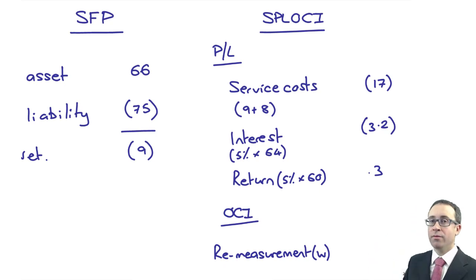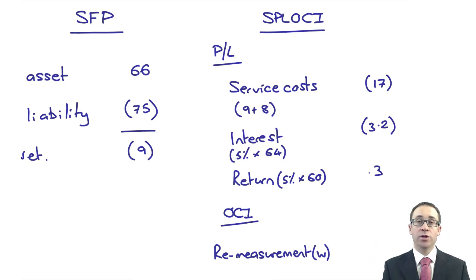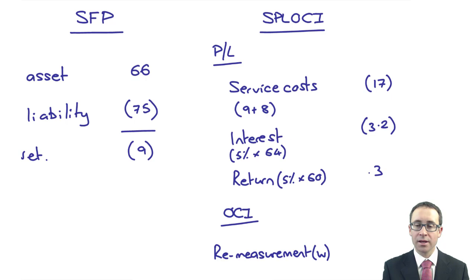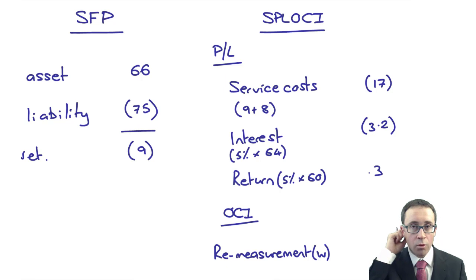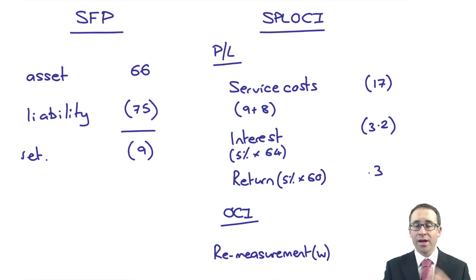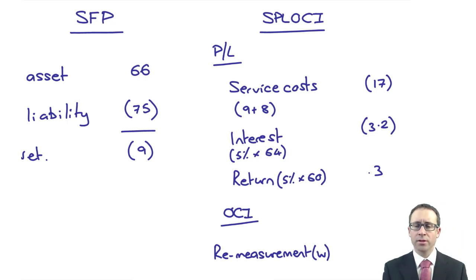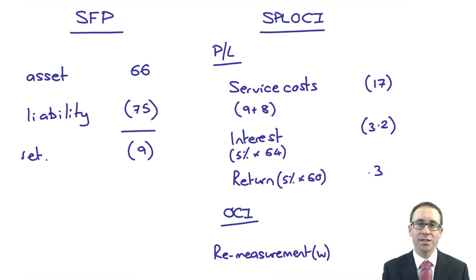From a group's perspective, you would show the net pension liability of nine within non-current liabilities. The profit or loss figures — the service cost, the interest and the return — if Finland is the parent, they need to go through the parent's profit or loss. So those three figures would be adjustments to working number five, the parent's retained earnings. If you're preparing the group statement of profit or loss, they will be adjustments in the parent's column: service costs within operating expenses, and interest and return within the financing section.